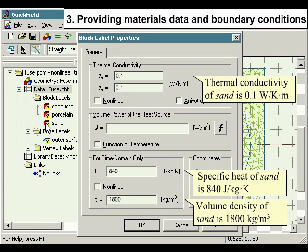Thermal conductivity of sand is 0.1 W/K·m. Specific heat of sand is 840 J/kg·K. Volume density of sand is 1800 kg/m³.